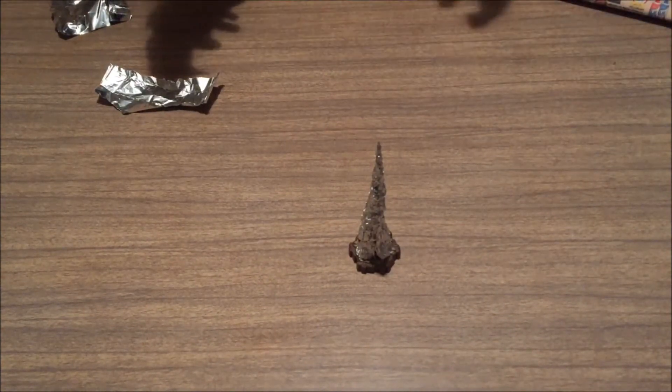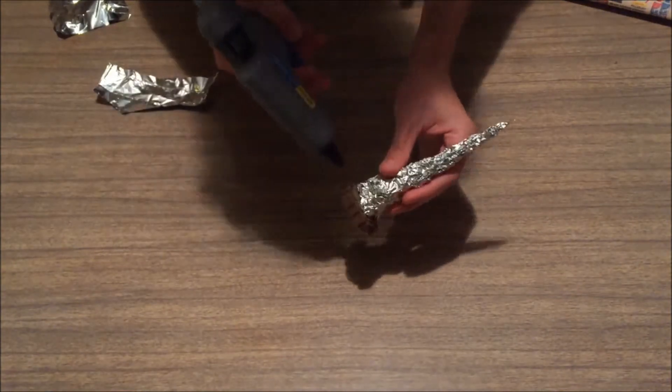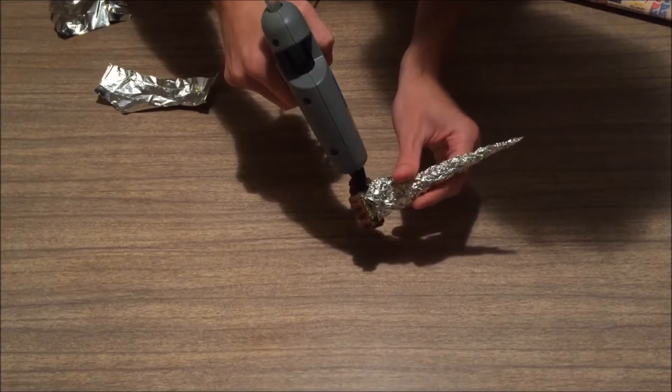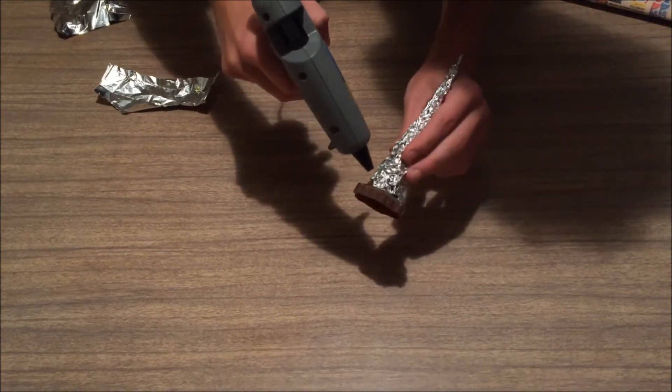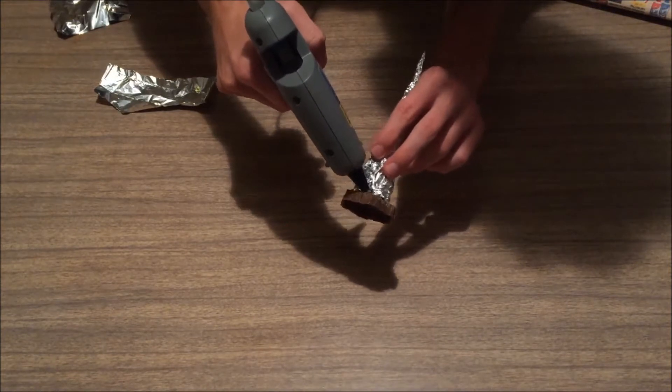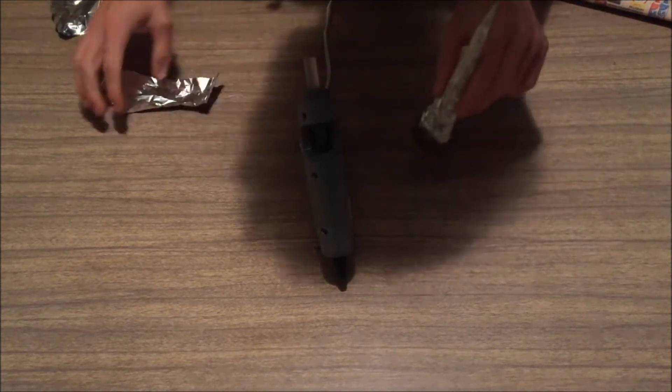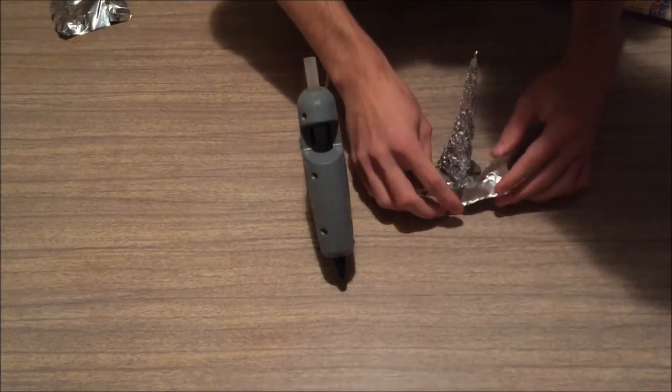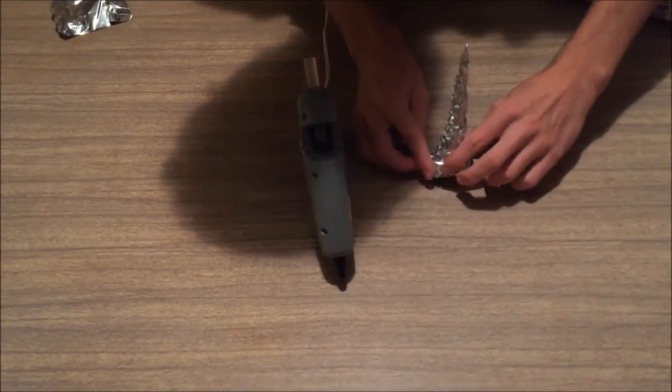So now that we've got our spire attached, we need to clean up this base and make it flow into the rest of our hex. I'm just going to apply some hot glue around the base, take a little bit more aluminum foil, and apply it to the base of this structure.